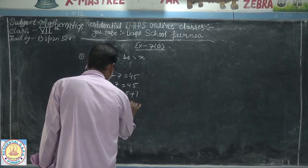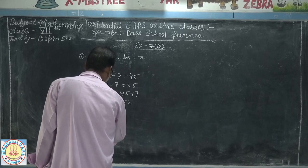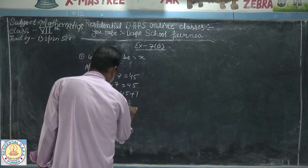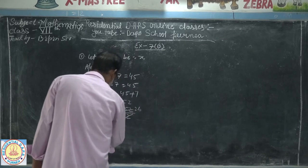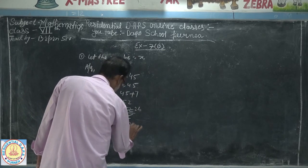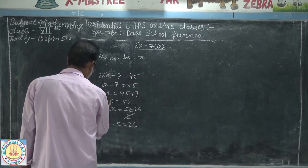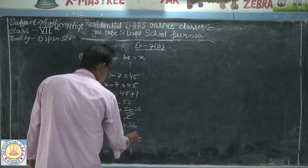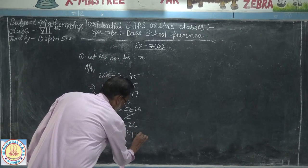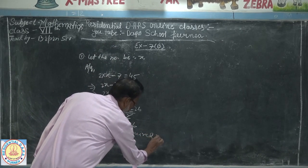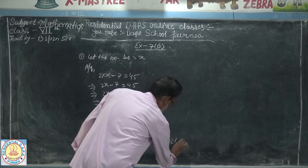2x is equal to 45. Transposing -7 to the other side, sign changes from minus to plus: 2x is equal to 52. Therefore x is equal to 52 divided by 2, which gives x is equal to 26. So the required number is 26.